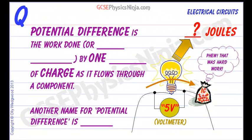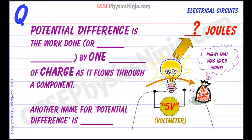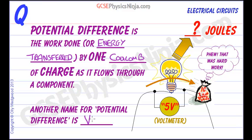Let's have a look at this flashcard with that analogy in mind. So potential difference is the work done or energy transferred by one coulomb of charge as it flows through a component. Another name for potential difference is voltage. They are the same thing.